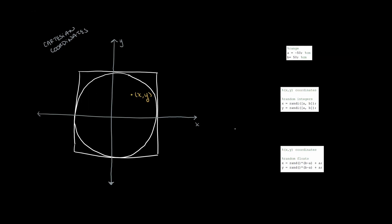In the Cartesian coordinate system, we can use the coordinates of where the dart lands to find two things. One, if the dart landed inside of the circle, or two, if the dart landed outside of the circle, but still inside of the square.